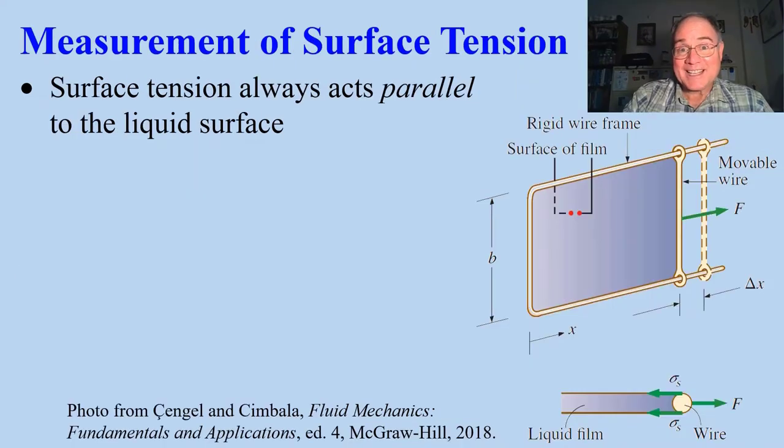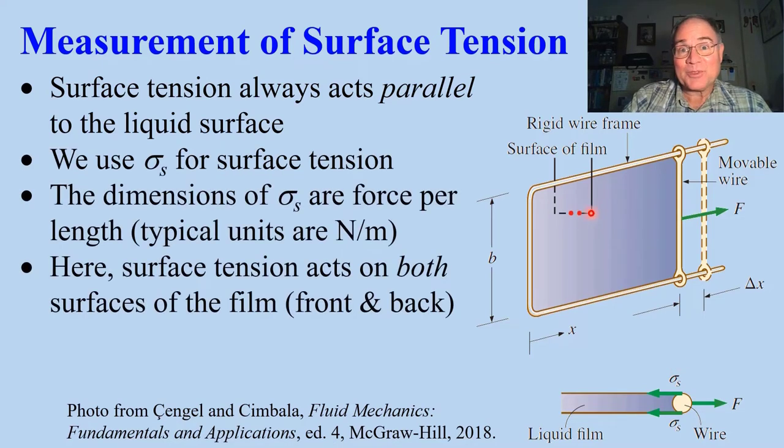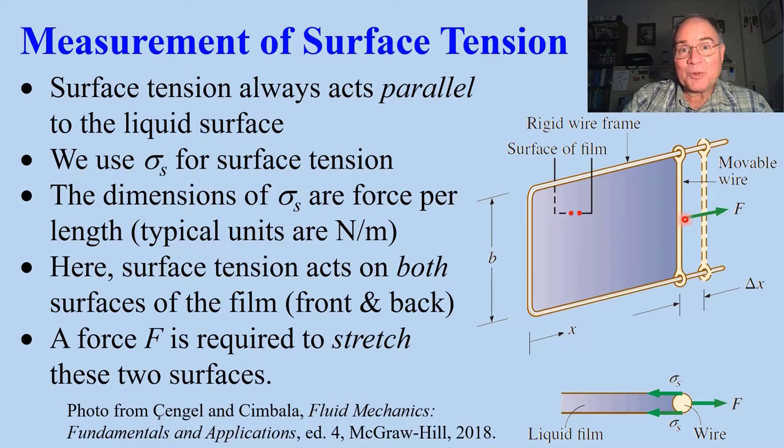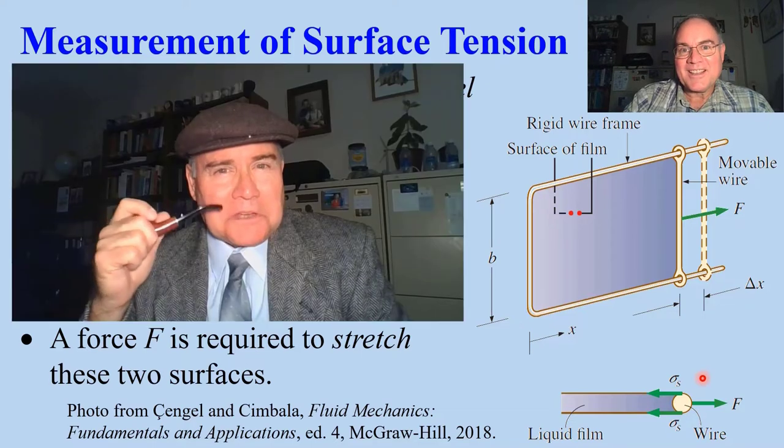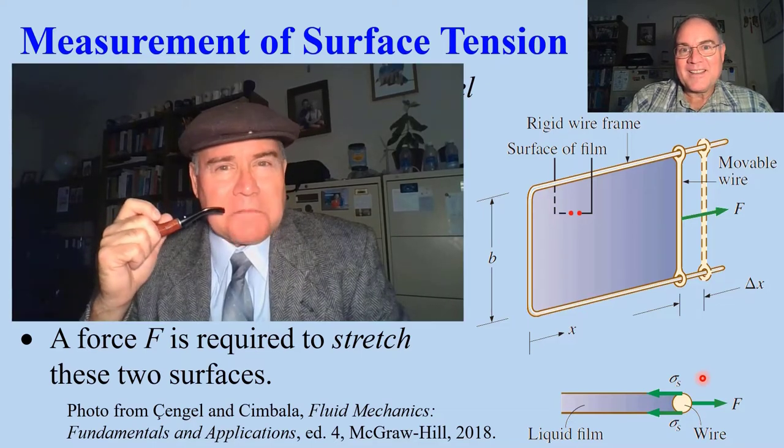Surface tension always acts parallel to the liquid surface. Here's a rig set up to measure surface tension. Here, surface tension acts on both the front and back surfaces. When you pull this wire, a force is required to stretch the two surfaces. We illustrate the forces here. And if you measure F and B, you can easily calculate sigma S.